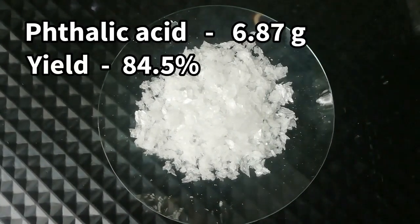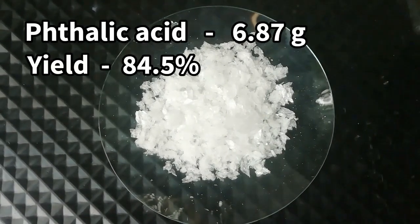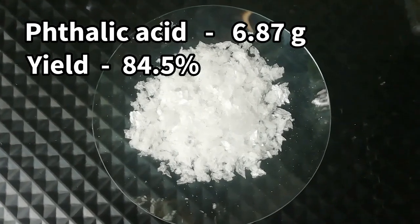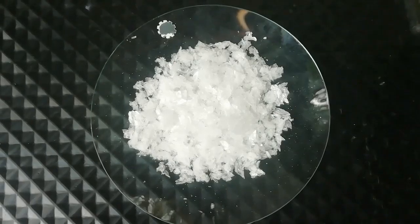Here is the final result, 6.87 grams of thalic acid. Next video, I will be using this to make thalic anhydride.